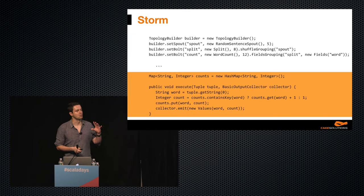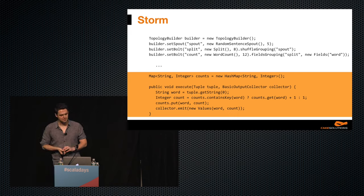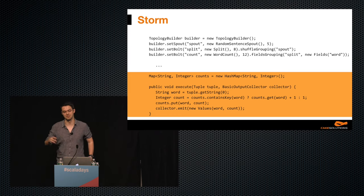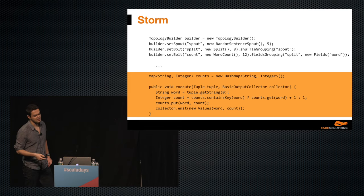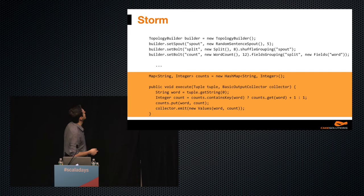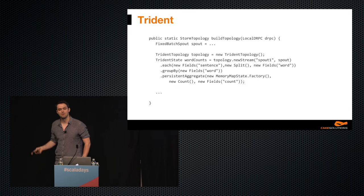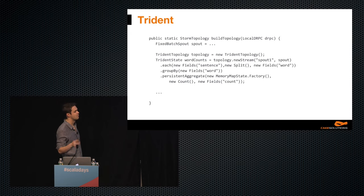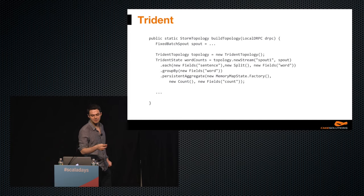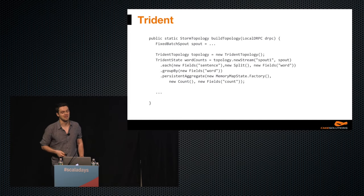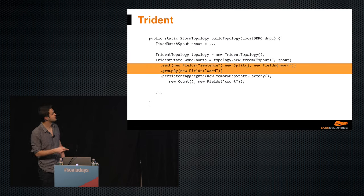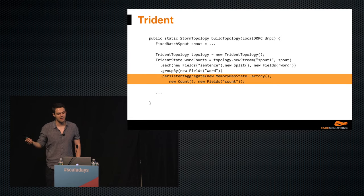Let's focus on how the actual word count bolt is implemented. As Storm doesn't have any support for managed state, I've defined a local state, which is far from ideal but good as a sample. Let me move on and take a look at Trident. As I mentioned, Trident is Storm's micro-batching extension, and apart from many goodies, provides state management — quite useful when implementing word count. As you can see, I could use high-level operations like 'each' and 'group by', so it's a little bit better. I was also able to use Trident's managed state for storing the count.